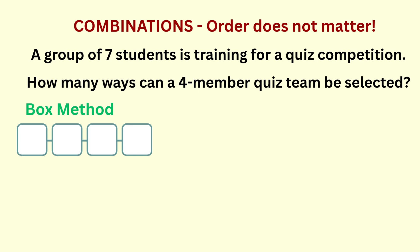With the box method, we put 4 slots, since the team should consist of 4 persons, and we are choosing from a total of 7. So in the first slot we have 7 choices. Once a student is placed in the first box, 6 students remain, giving 6 choices for the 2nd box. We're then down to 5 choices for the 3rd box, and 4 choices for the 4th box. If the order was important, the number of 4-member teams from 7 students would be 7 × 6 × 5 × 4 = 840 teams.